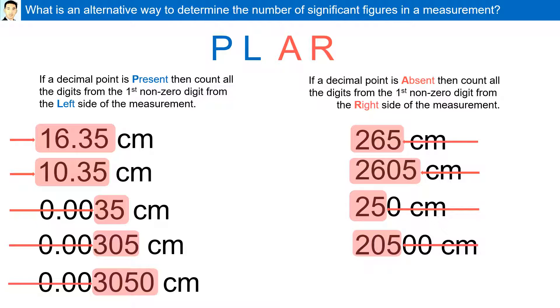Here there are 3 significant figures. To summarize the PLAR method: if the decimal point is present, you come from the left. If it's absent, you come from the right.